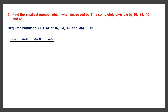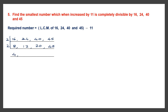Let's begin by dividing by 2. 2 eights are 16, 2 twelves are 24, 2 into 20 is 40, and 45 we can't divide so we bring it down as it is. Continue dividing by 2: 2 fours are 8, 2 sixes are 12, 2 tens are 20, 45 comes down as it is. Again divide by 2: 2 twos are 4, then we have 6 — 2 threes are 6, we have 10 — 2 fives are 10, and 45.